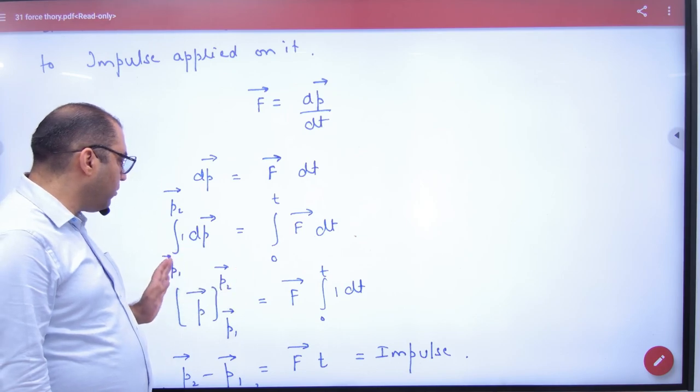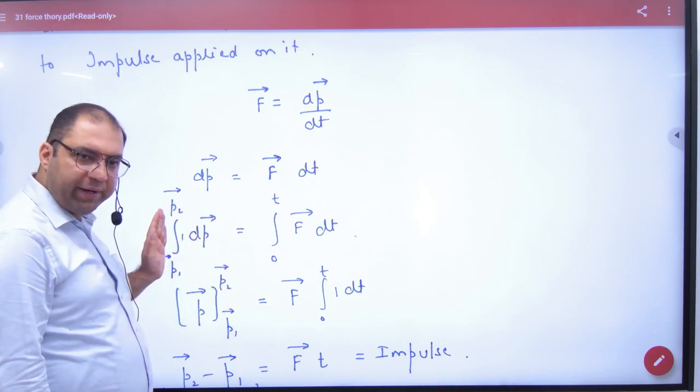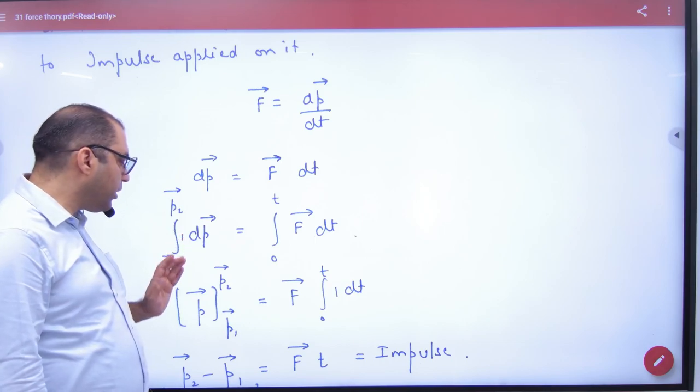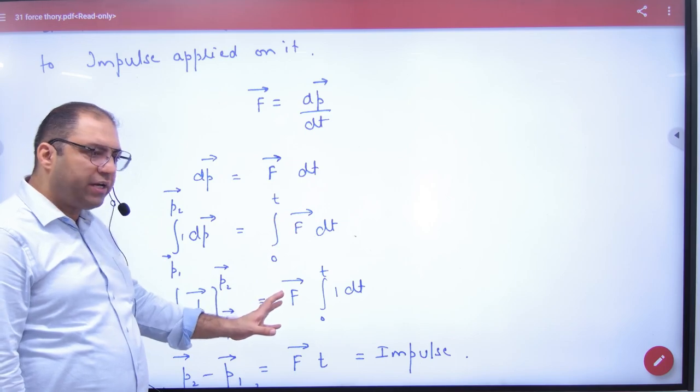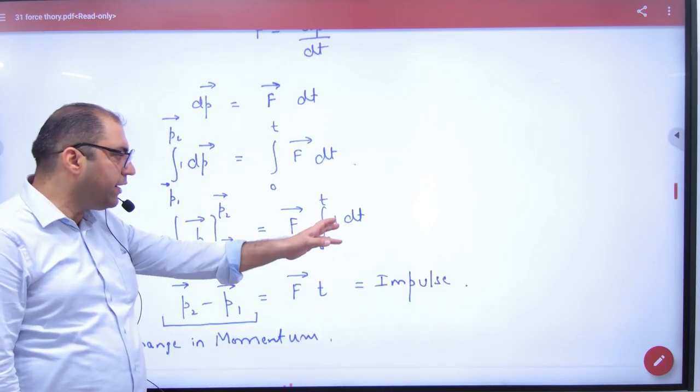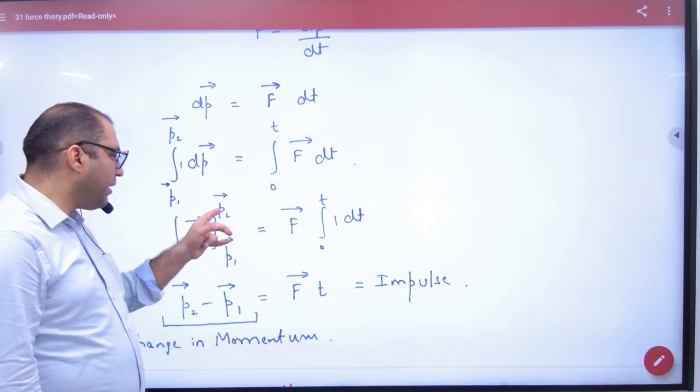So when time is zero, what was the momentum? P1 vector. When time is t, what was the momentum? P2 vector. What is the integration of dp? P vector. Force is constant, time is constant. So integration of dt gives t. It is not a vector. So here P is a vector.